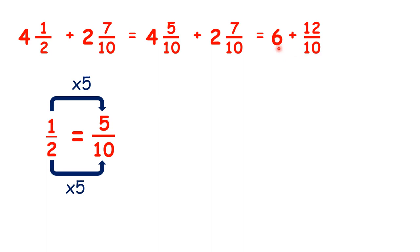But we can't write 6 and 12 tenths. We can't have a whole number and an improper fraction. So we need to convert those 12 tenths into a mixed number. 12 tenths is the same as 1 and 2 tenths. So now we have 6 plus 1 and 2 tenths. So we can see that our answer is 7 and 2 tenths.